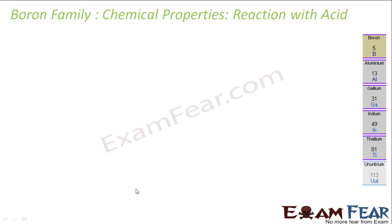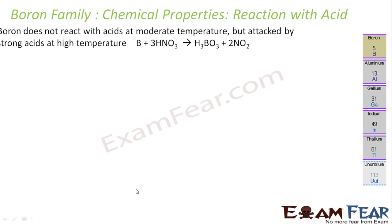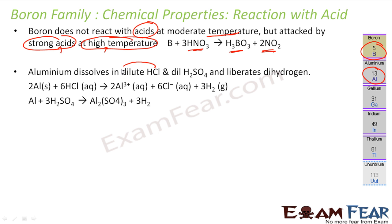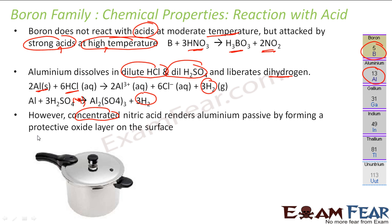Regarding reaction with acids: boron does not react with acids at room temperature, but with strong acid and high temperature it reacts — for example, boron reacts with nitric acid to form boric acid and NO2 gas. Aluminium dissolves in dilute sulfuric acid and dilute hydrochloric acid, liberating hydrogen gas. However, with concentrated acid, aluminium forms a protective Al2O3 layer and does not react further.